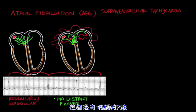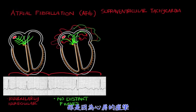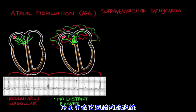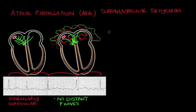There are no distinct P waves because the atria is spasming. So you're not going to get that nice, unified, concentric contraction of the atria. You have these coarse squiggly lines instead, representing the atrial spasm.